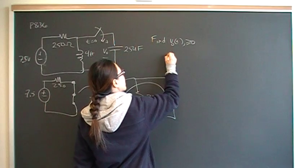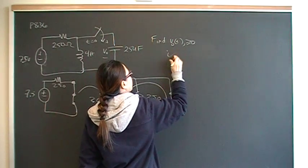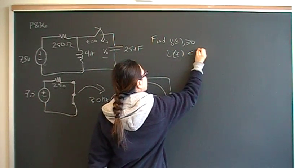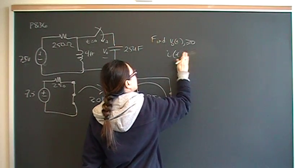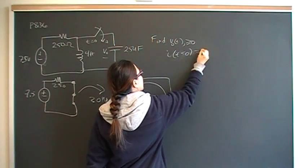That's before. We know the current before the switching happens, I before time zero, is 30 milliamps.